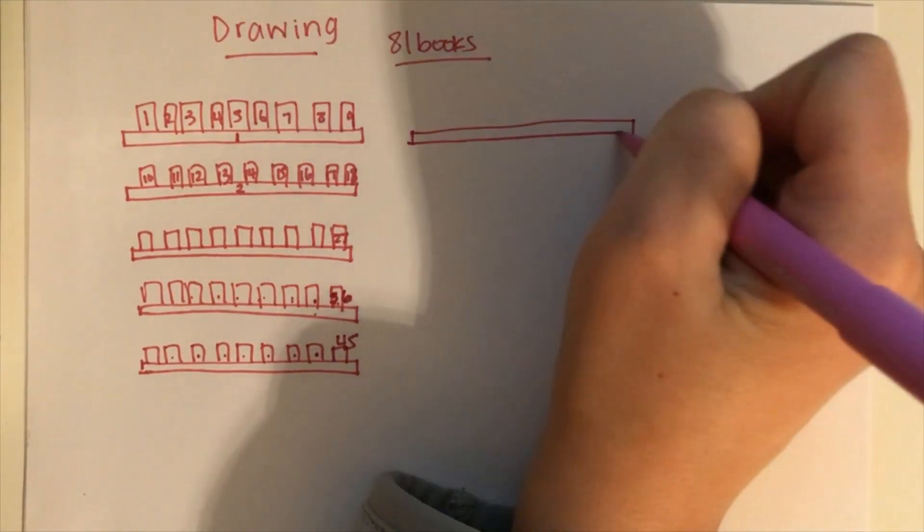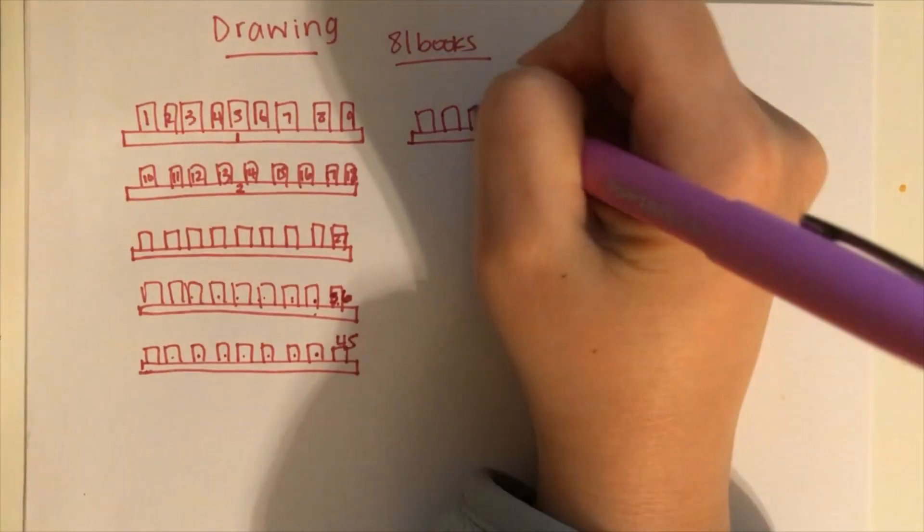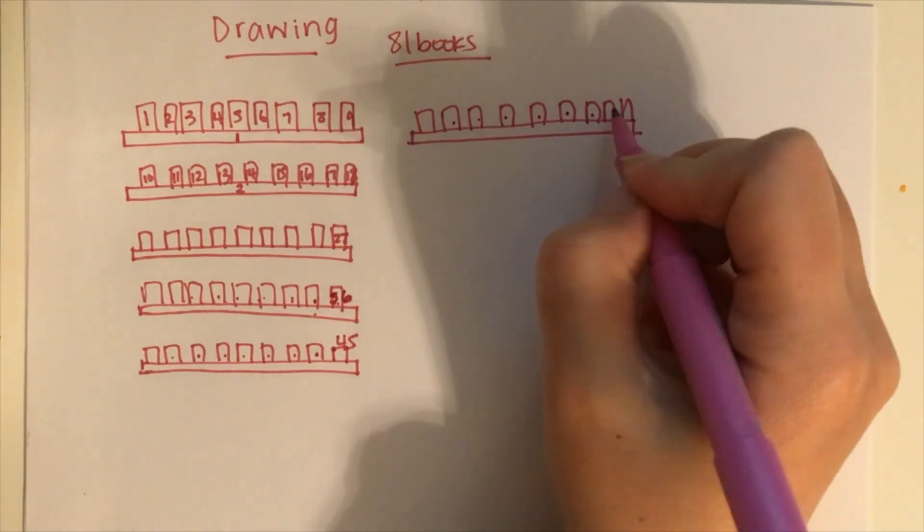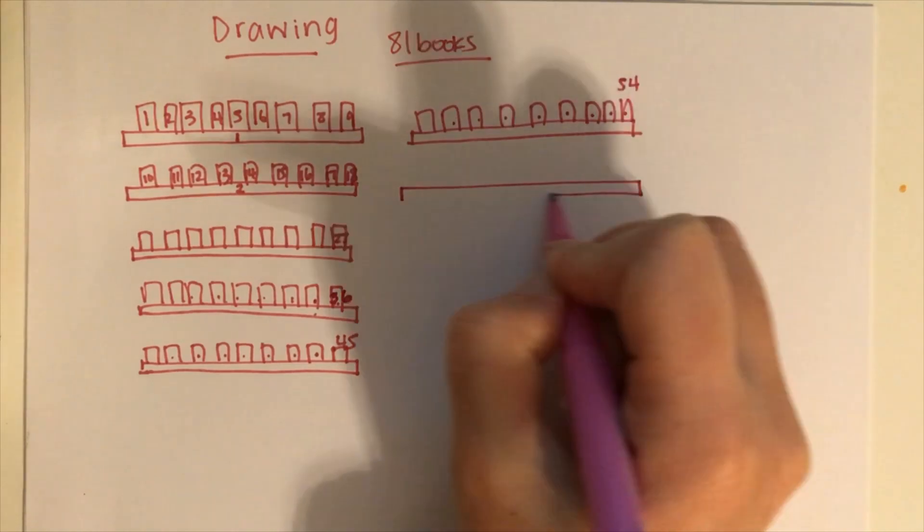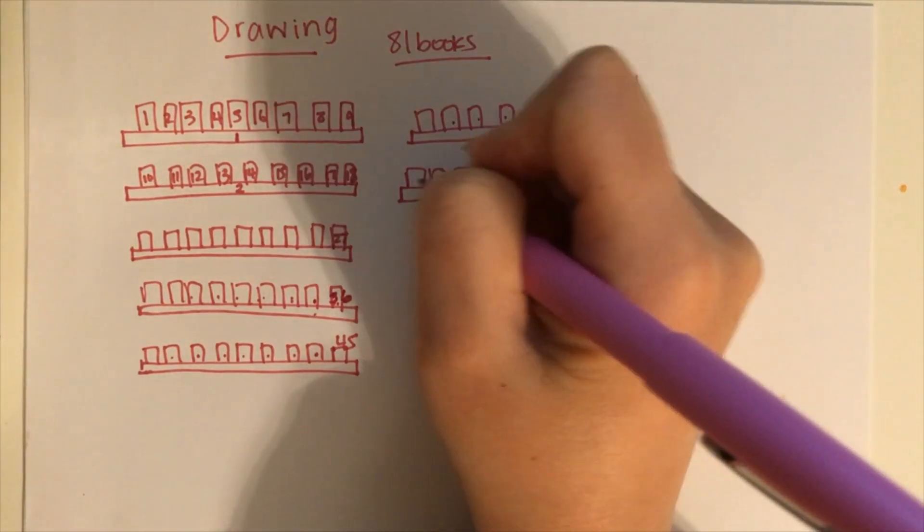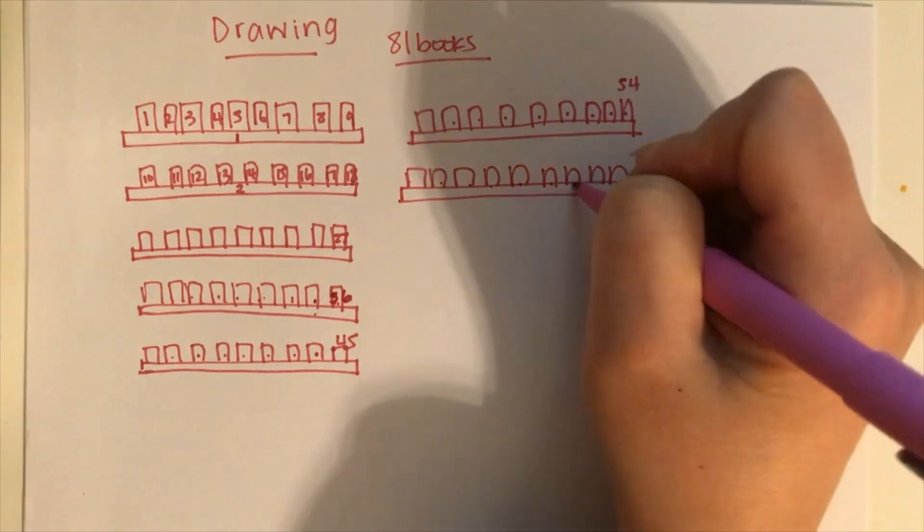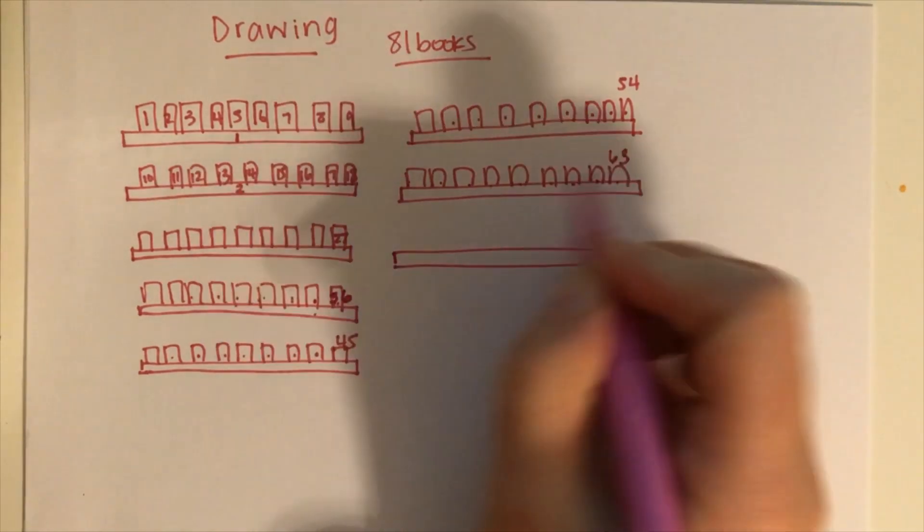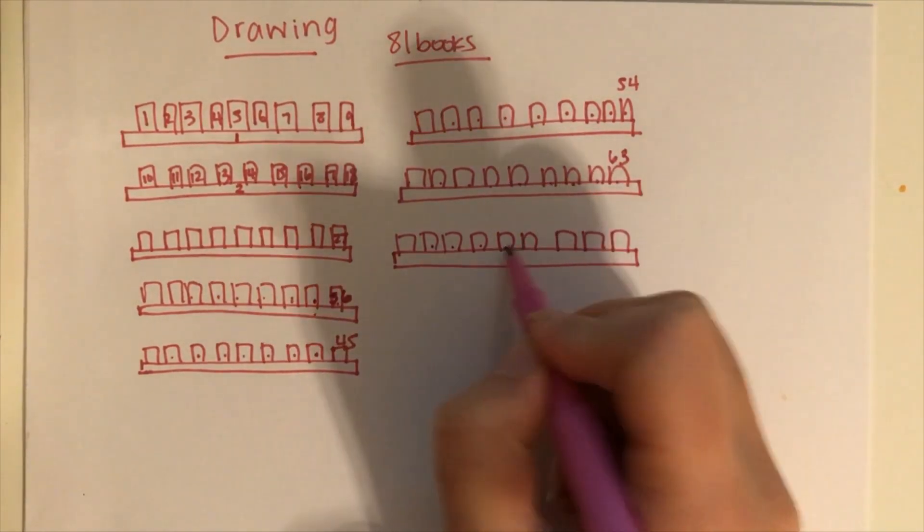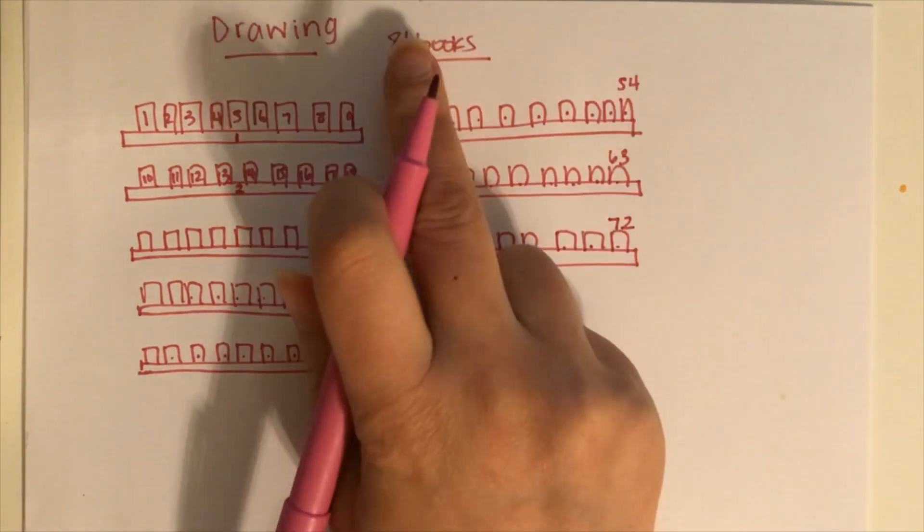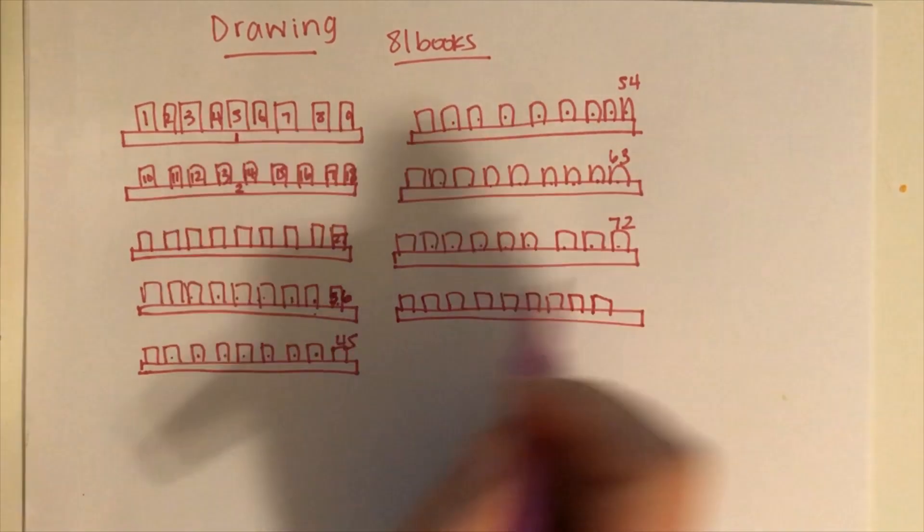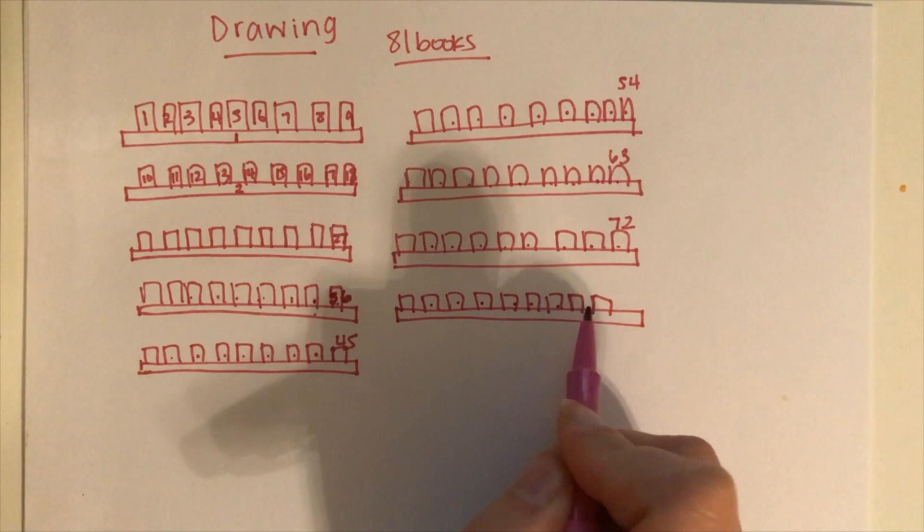Continuing: 45, 46, 47, 48, 49, 50, 51, 52, 53, 54. Then 55, 56, 57, 58, 59, 60, 61, 62, 63. We're really close to 81. Counting: 72, 73, 74, 75, 76, 77, 78, 79, 80, 81.